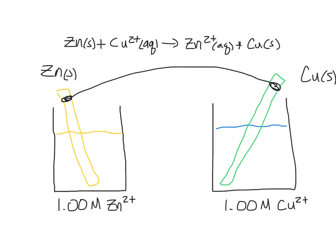Here, zinc solid will be transformed into zinc 2+. So I'm going to draw a little arrow showing that zinc 2+ is going to be formed. If zinc 2+ is formed, that means that electrons need to leave this electrode and travel to the other electrode.